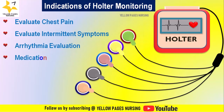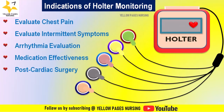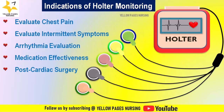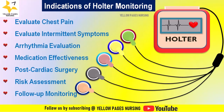Arrhythmia evaluation: Holter monitoring is used to identify different types of heart rhythm irregularities such as atrial fibrillation, atrial flutter, ventricular tachycardia, and bradycardia. It also assesses medication effectiveness for anti-arrhythmic treatments, monitors heart activity post cardiac surgery, supports risk assessment for stroke or heart attack, and aids follow-up monitoring to detect any recurrent arrhythmias.